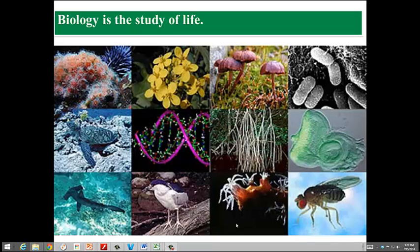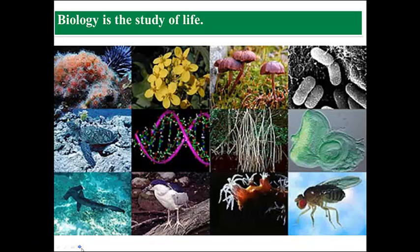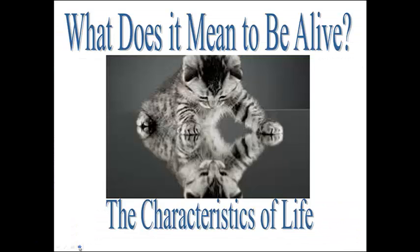From single-cell organisms like bacteria to more complex multicellular organisms — in this picture we can see bacteria, mushrooms, plants, birds, and fish — all of them represent a living organism. But what does it mean to be alive? Let's take a look at the characteristics of life.